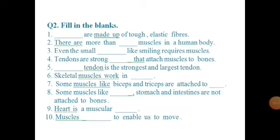Fill in the blanks: 1. Dash are made up of tough elastic fibers. 2. There are more than dash muscles in a human body. 3. Even small dash, like smiling, requires muscles. 4. Tendons are strong dash that attach muscles to bones. 5. Dash tendon is the largest and the strongest tendon. 6. Skeletal muscles work in dash. 7. Some muscles like biceps and triceps are attached to dash. 8. Some muscles like dash, stomach and intestines are not attached to bones. 9. Heart is a muscular dash. 10. Muscles dash to enable us to move.